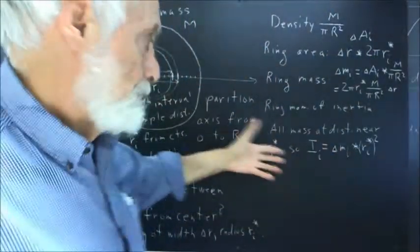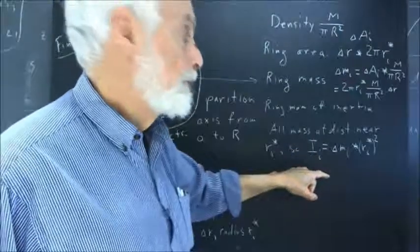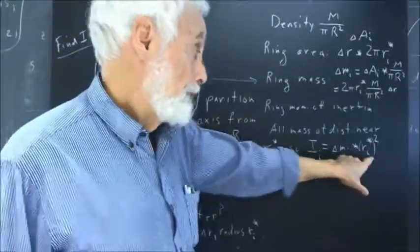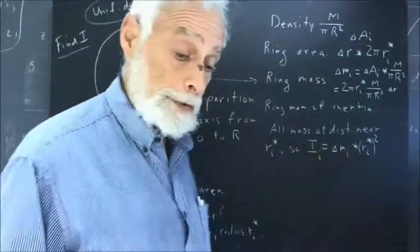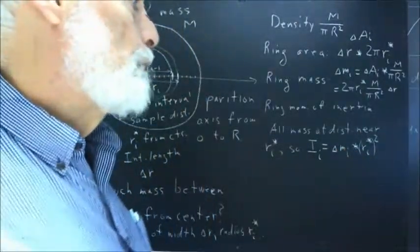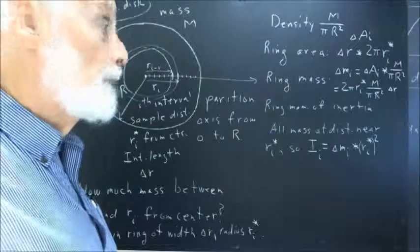Okay, just going with the principle that moment of inertia of a mass at a distance R is M R squared, this follows immediately. So now, what's the total moment of inertia?